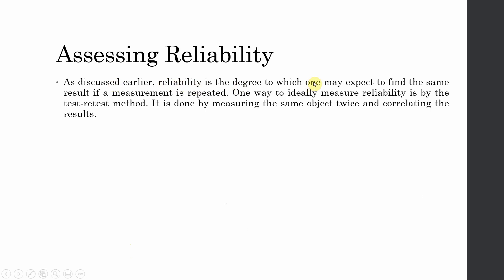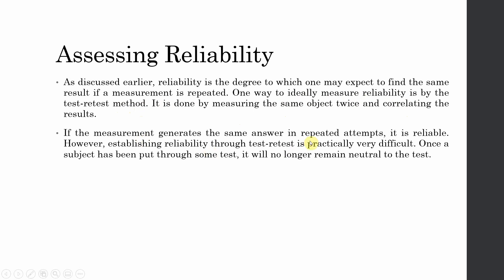Reliability is the degree to which one may expect to find the same result if the measurement is repeated with the same subject under similar conditions. One ideal way to measure reliability is the test-retest method — you test and then retest. It is done by measuring the same object twice and correlating the results. The higher the correlation, the higher the consistency. If the measurement generates the same answer in repeated attempts, it is reliable.